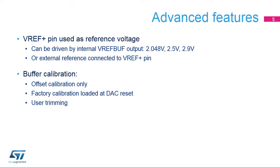The output buffer's voltage offset is calibrated. This calibration is performed at the factory and loaded after reset. User calibration can be done when the operating conditions differ from nominal factory calibration conditions — in particular when VDD, VDDA voltage, temperature, and VREF Plus values change — and can be performed at any point during application by software.